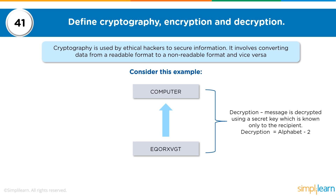Decryption is replacing the alphabet and taking it back by two characters. So E-2 becomes C, Q-2 becomes O, O-2 becomes M, and so on. Anybody who knows this key — the shift key — will be able to decrypt this. This depends on the user. If I want to utilize alphabet+5, then the shifting of that character will be the fifth character from that particular character, and so on.